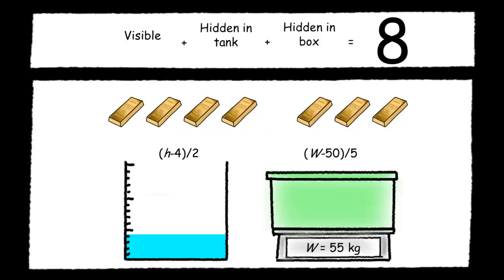If I add the number of gold bars hidden in the tank and the box to the number of gold bars that are visible, I always get 8.